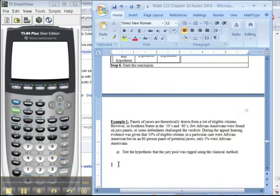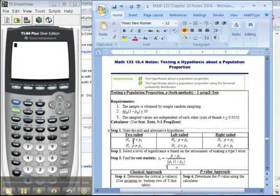Alright, so now it's time for the last section of Chapter 10 that the calculator is helpful with, and that is 10.4, Testing Population Proportion.